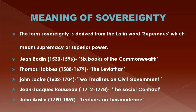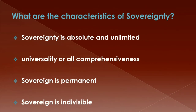The most prominent exponent of sovereignty was John Austin. He gave a classic definition of sovereignty. According to him, the sovereign was a determinate person or a body of persons. The power of the sovereign was legally unlimited — it was absolute and indivisible. To him, law was the command of the sovereign.